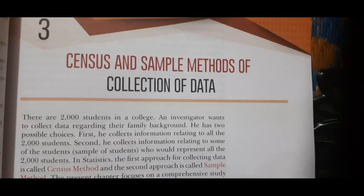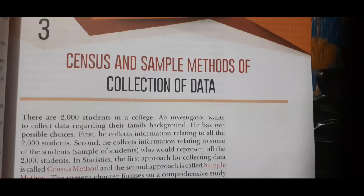Primary data requires more time and efforts for data collection. It is more costly as more number of enumerators are required. It is raw data on which statistical tools need to be applied. For example, census data collected by the government. Secondary data is less reliable as it has been collected by someone else for a different purpose. It requires less time and efforts as data is already available. It is less costly as it is taken from published or unpublished sources. It is finished and processed data. Example is data published in an economic survey.